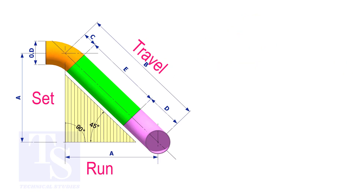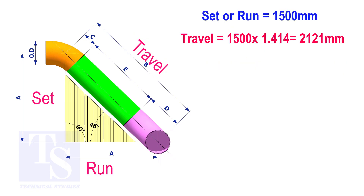Try another example. Suppose the value of the set or the run is 1500 millimeters. The value of the travel will be 1500 multiplied by 1.414, which equals 2121 millimeters.